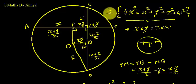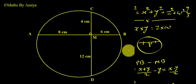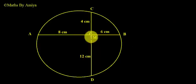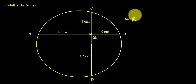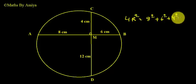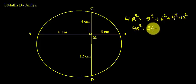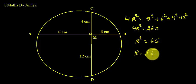Now let us practice this concept with a question from the Maths by MEF 500 booklet. AB and CD are chords perpendicular at M. AM = 8 cm, MB = 6 cm, CM = 4 cm, MD = 12 cm. Find the radius. Applying the formula: 4r² = 8² + 6² + 4² + 12² = 64 + 36 + 16 + 144 = 260. So r² = 65, and the radius is √65.